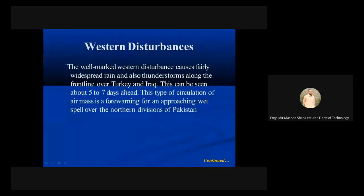Well-marked western disturbances cause fairly widespread rain and thunderstorms along the front line over Turkey and Iraq. This can be seen about five to seven days ahead, and this type of circulation of air masses is a forewarning for an approaching wet spell over the northern division of Pakistan.